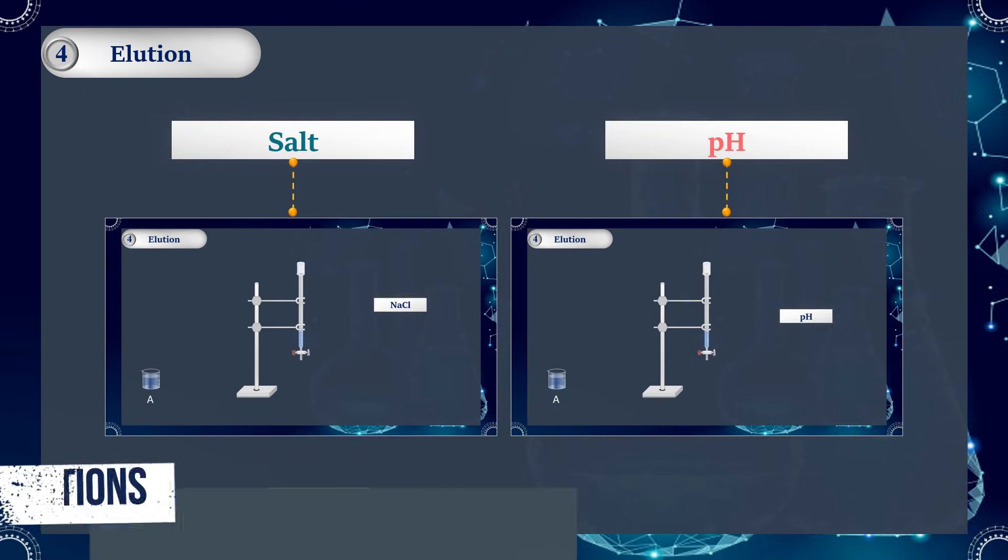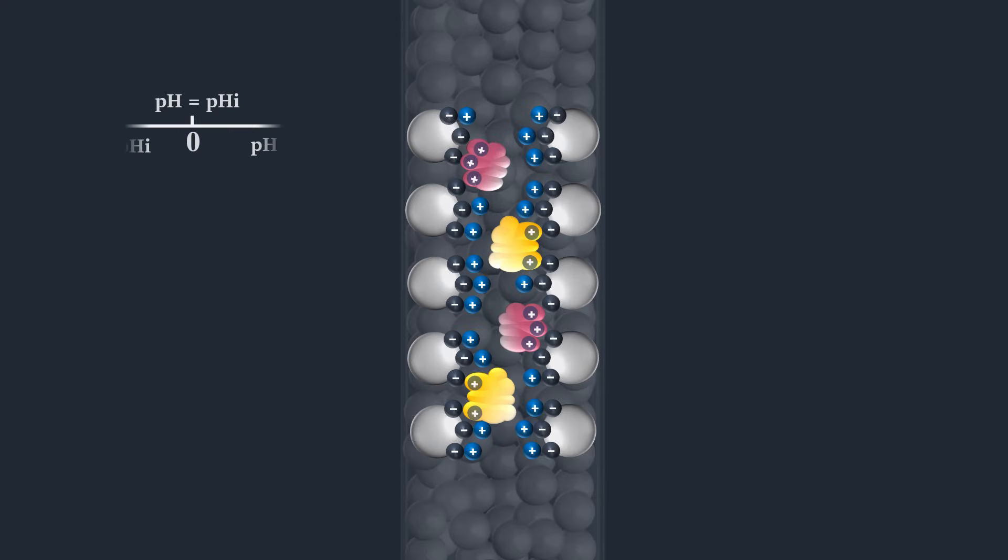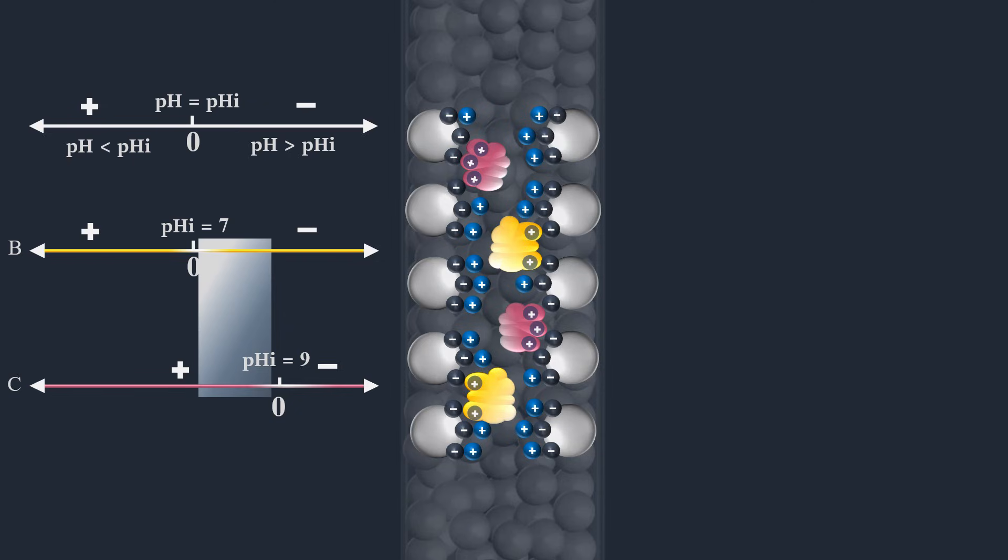Also, varying the pH of the buffer can be used to affect the separation and to elute the retained proteins. As we've seen, the pHi of protein B is equal to 7, and the pHi of protein C is equal to 9. So if we add a buffer with pH above the isoelectric point of protein B and below the isoelectric point of protein C, the protein B will become negatively charged and can then be eluted.